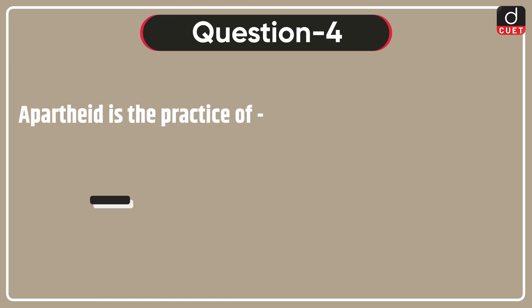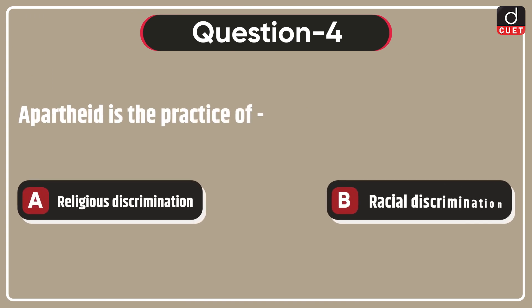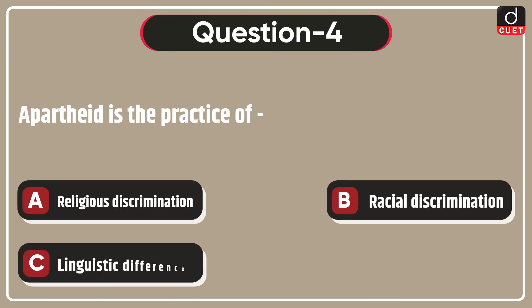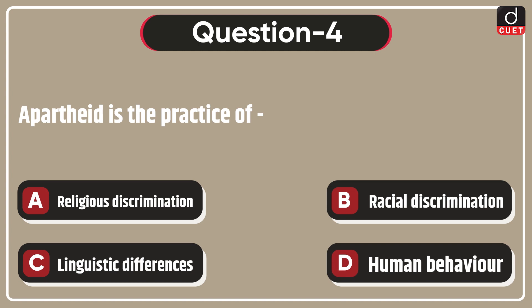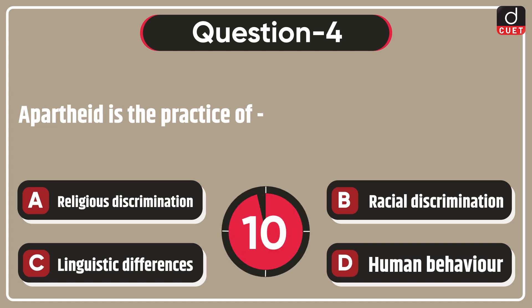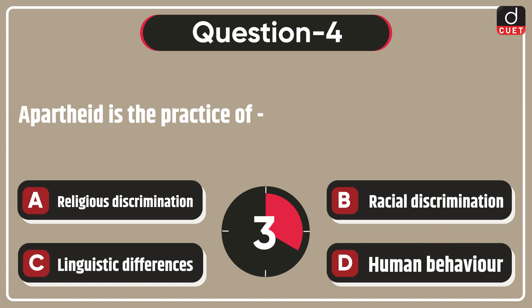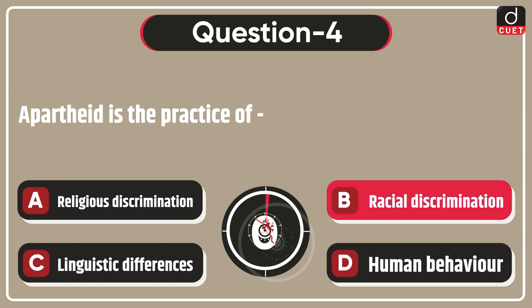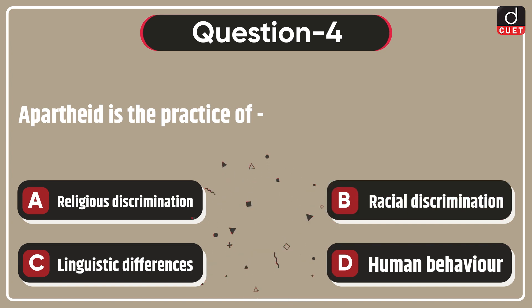Next question is, Apartheid is the practice of: religious discrimination, racial discrimination, linguistic discrimination, or human behavior? The correct answer is option B, racial discrimination.